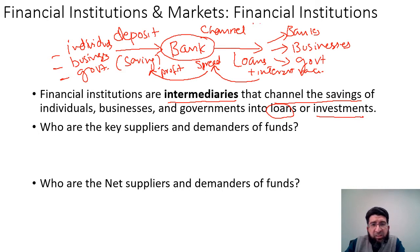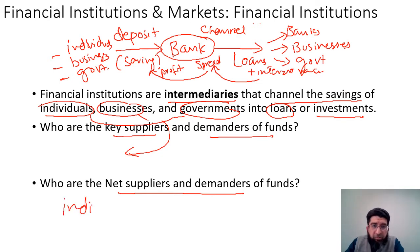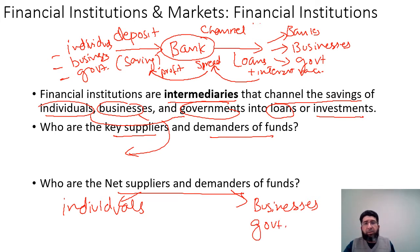The question is: who are the key suppliers and demanders of funds? In any country, it is always individuals, businesses, and governments who act as key suppliers and demanders of funds. However, when it comes to net suppliers and demanders, individuals are net suppliers, while businesses and government are typically the net demanders of funds.